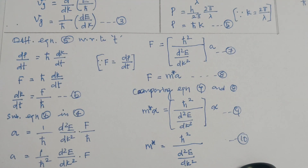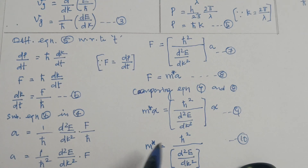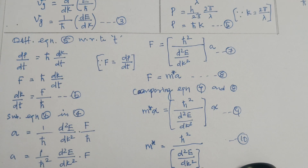There are four special cases. Case 1: if d²E/dk² is positive, then m* is also positive. Case 2: if d²E/dk² is negative, then m* is also negative. Case 3: if d²E/dk² is very large, the electron behaves as a light particle. Case 4: if d²E/dk² is very small, the electron behaves as a heavy particle.